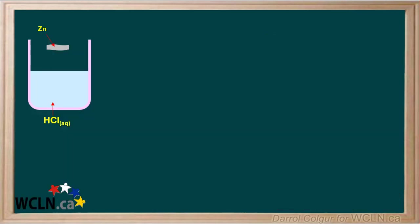When a piece of zinc is dropped into a solution of hydrochloric acid, bubbles of hydrogen gas form and the piece of zinc gradually shrinks. An aqueous solution of zinc chloride also forms.